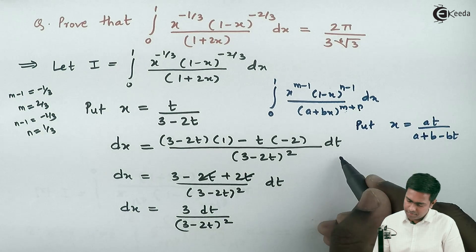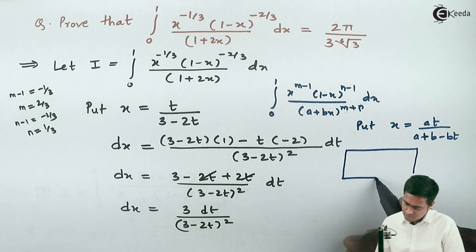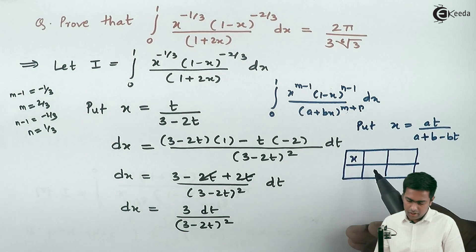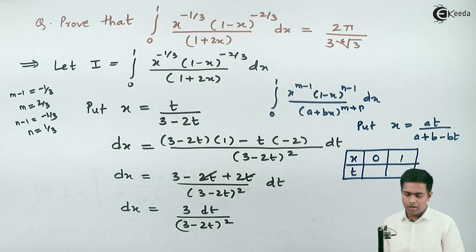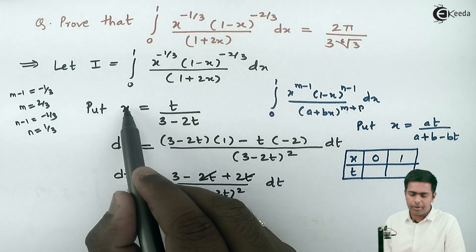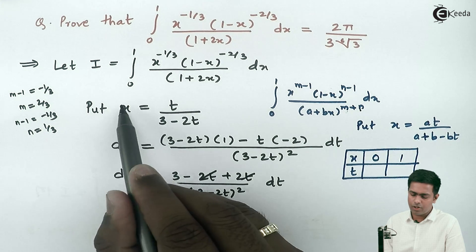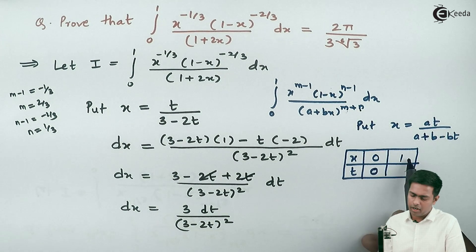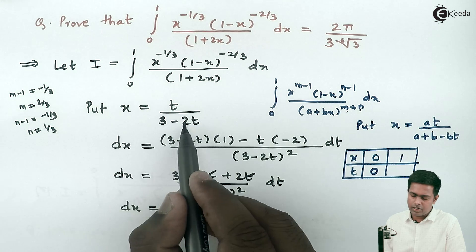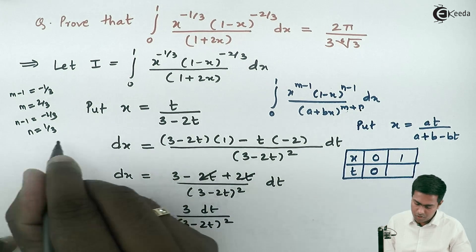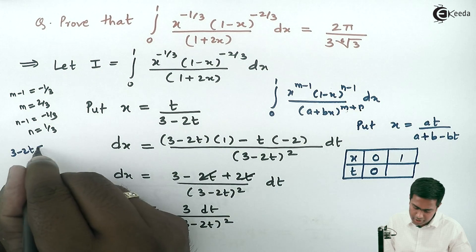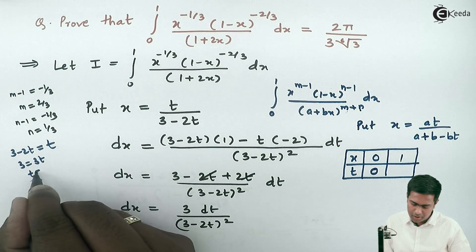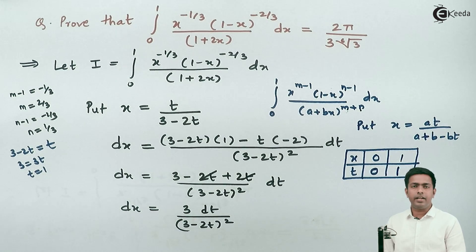Now let's check the limits. When x equals 0, the substitution gives t equals 0. When x equals 1, we get 3 minus 2t equals t, so 3 equals 3t, meaning t equals 1. The limits of integration remain 0 to 1.